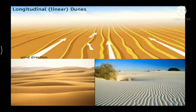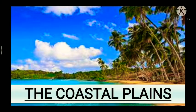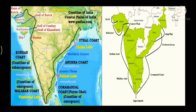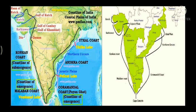Next are the coastal plains. The peninsular plateau is flanked by narrow coastal strips running along the Arabian Sea on the west and the Bay of Bengal on the east. The western coast, sandwiched between the Western Ghats and the Arabian Sea, is a narrow plain. It consists of three sections: the northern part is called the Konkan coast (Mumbai–Goa belt), the central part is the Kanara plain, and the southern section is referred to as the Malabar coast.